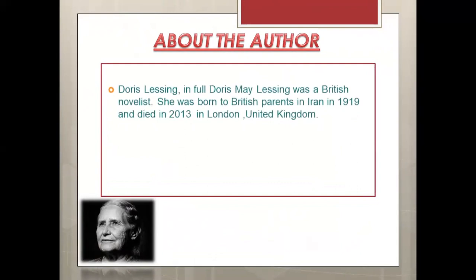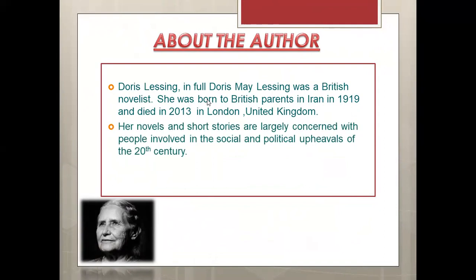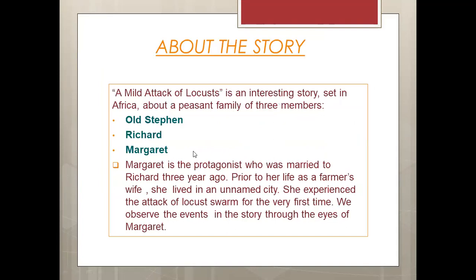Doris Lessing — in full, Doris May Lessing — was a British novelist. She was born to British parents in Iran in 1919 and died in 2013 in London, United Kingdom. Her novels and short stories are largely concerned with people involved in the social and political upheavals of the 20th century. She was awarded the Nobel Prize for Literature in 2007.